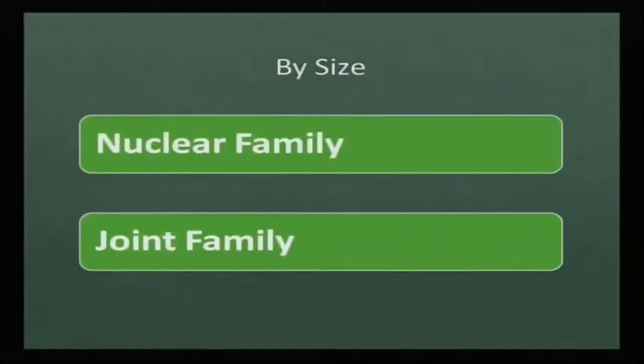By size, we have nuclear family and joint family. In nuclear family, you mostly find husband, wife, son, and daughter. In joint family, parents and the husband's brother and his wife may also stay together along with the couple. In joint family, parents and often all members of previous generations also stay with the family, making the number larger.